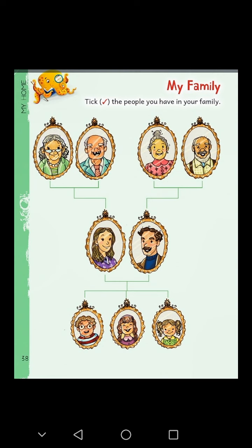Students, open page number 38 of your I Can Explore book number 1. On this page, you will see various pictures. Identify all of them and then tick the ones who are in your family. Like if you have your grandparents, tick that column. Do the same for father, mother, brother, and sister — tick only those who are in your family.